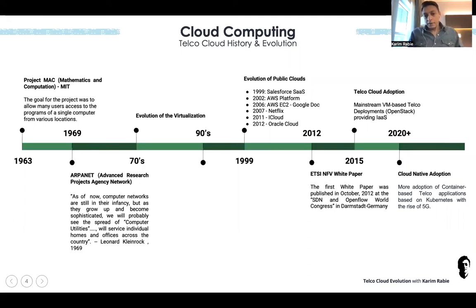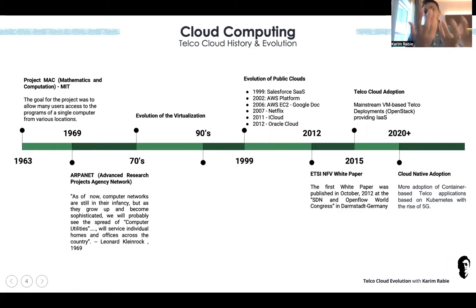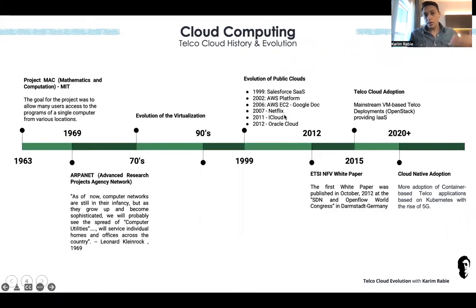In 1999, we started to see the evolution of public clouds — the concept of software as a service, where someone provides certain software on demand, cloud-based. We saw the rise of Salesforce providing software, and then AWS, Netflix, iCloud, Oracle Cloud. That was the evolution of the public cloud.